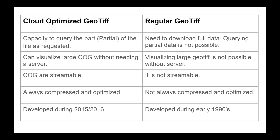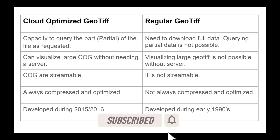COGs are always compressed and optimized, but regular GeoTIFFs might not always be. That's why a COG might have a reduced size, but it's never guaranteed which has the larger file size. Generally speaking, if both are compressed, the COG will be slightly larger because it has to store extra metadata related to zoom levels. COG was developed around 2015–16, whereas regular GeoTIFF was developed in the early 1990s.